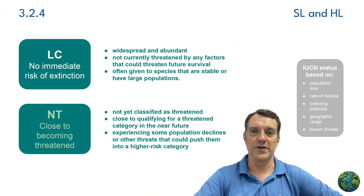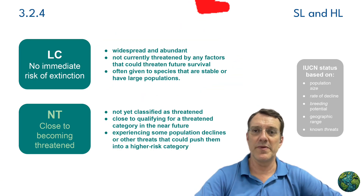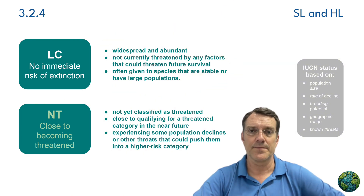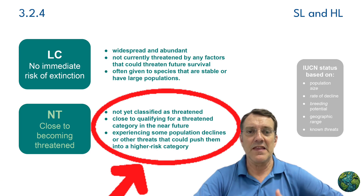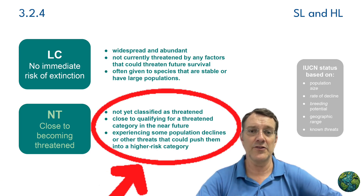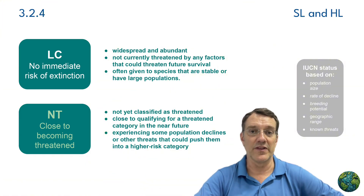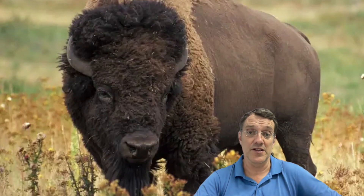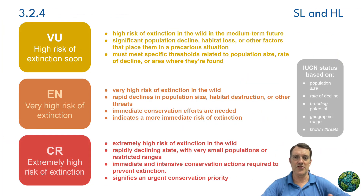Species labeled least concern are widespread and abundant. These animals and plants face no immediate risk of extinction because they have large, stable populations and don't face significant threats. Think of common birds like robins or pigeons. Near-threatened species are doing okay for now, but they are showing some warning signs. They're experiencing some population declines or facing new, emerging threats. They're not yet threatened, but they could become so in the near future if we don't monitor them carefully. The American Bison is one example — their populations have increased, but they remain vulnerable to future threats.